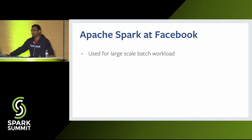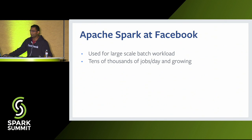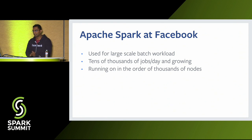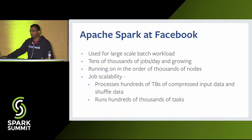At Facebook, we use Spark to run large-scale batch workload. The configuration tuning and optimizations you are going to hear about are mainly focused on large-scale batch workload, and they might not be applicable for other use cases like streaming, interactive, or small workloads. We run tens of thousands of jobs every day on compute machines spanning thousands of nodes.